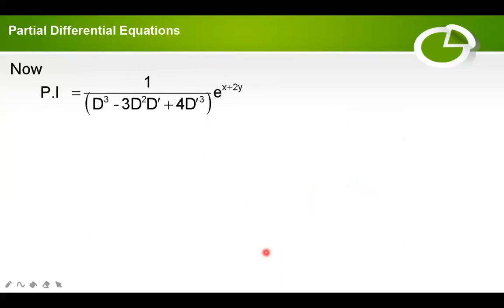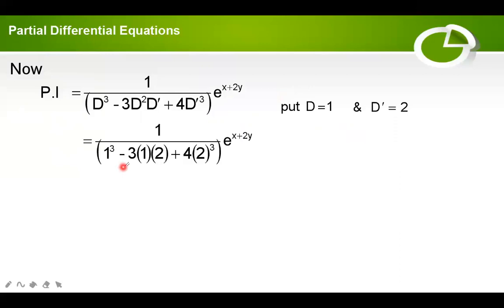For the particular integral: 1/(D³ − 3D²D' + 4D'³) into e raised to x plus 2y. Replace D with coefficient 1 and D dash with coefficient 2. So the denominator becomes 1³ − 3(1²)(2) + 4(2³) = 1 − 6 + 32 = 27. Therefore PI = (1/27) e raised to x plus 2y.